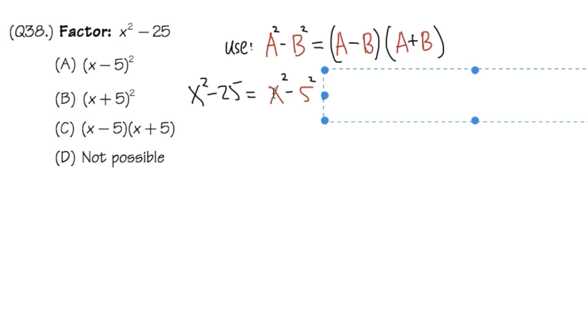So the answer for that will be just the first minus the second times the first plus the second. In other words, we have x minus 5 times x plus 5.